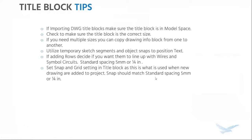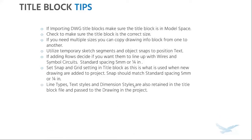When you use a title block and start a new schematic drawing or line diagram drawing inside of your project, it pulls in the snap and grid settings and the drawing view settings from that title block. So make sure you set those in the title block before you save it. The standardized five millimeter or quarter inch spacing for your snaps will greatly improve your design speeds. Line types, text styles, and dimension styles are also retained in the title block file — layers as well. So if you have extra layers, extra line types, or text styles in your DWG that you imported, you might want to purge those out so you don't have that extra stuff brought into your projects.